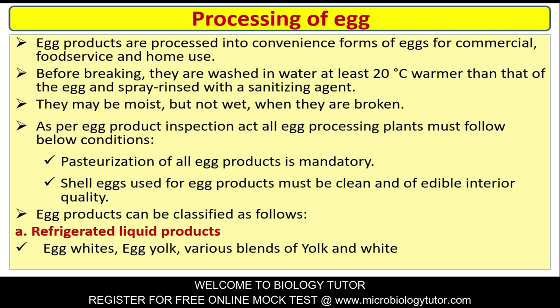Processing of egg: Egg products are processed into convenience forms for commercial food service and home use. Before breaking, eggs are washed in water at least 20 degrees Celsius warmer than the egg and spray-rinsed with a sanitizing agent. They may be moist but not wet when broken. As per the Egg Product Inspection Act, all egg processing plants must follow conditions including mandatory pasteurization of all egg products, and shell eggs used must be clean and of edible interior quality.